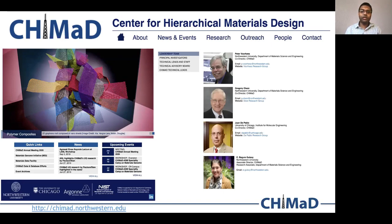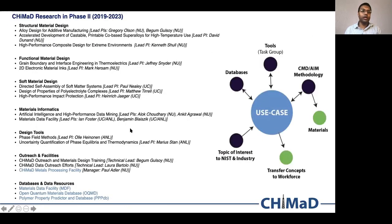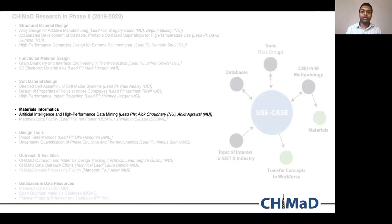This Center was established back in 2014, initially for five years, and recently we got renewed for another five years. So currently we are in phase two of CHIMAD. CHIMAD Research in phase two is organized in terms of several use case groups and tool groups, as you can see here. Ours is the Materials Informatics Tool Group on Artificial Intelligence and High Performance Data Mining.